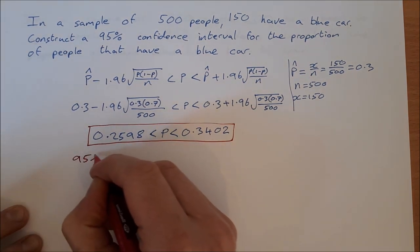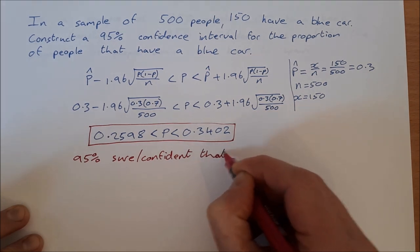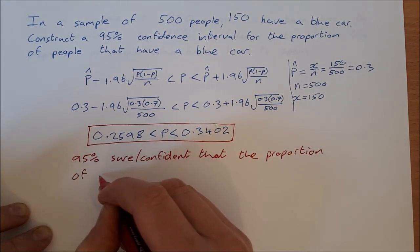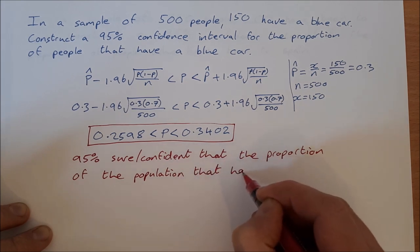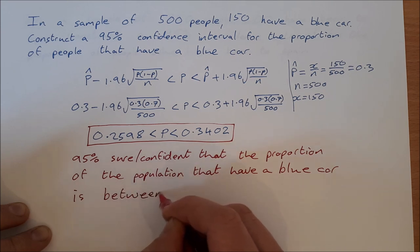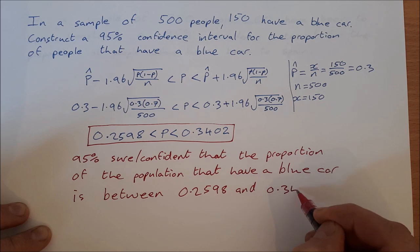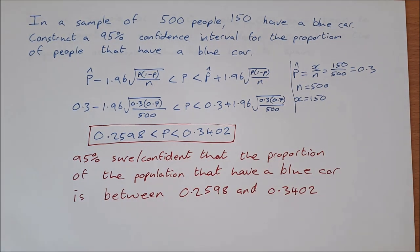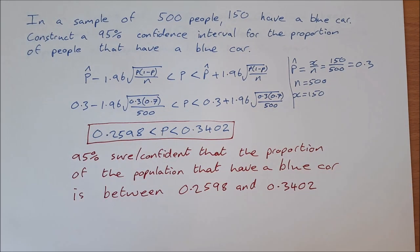In conclusion, we are 95% confident that the proportion of the population that have a blue car is between 0.2598 and 0.3402 — or as a percentage, between 25.98% and 34.02%. The exam usually asks you to write a conclusion in terms of the context of the question, and that would be the conclusion for this question.